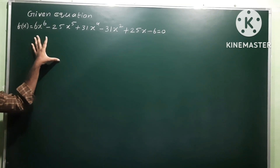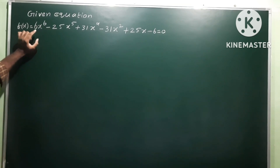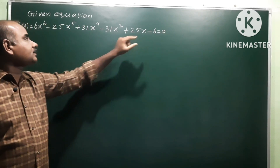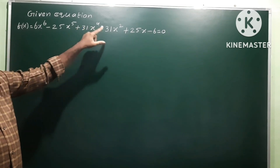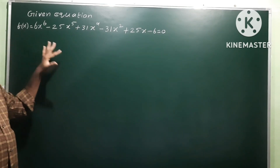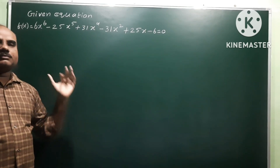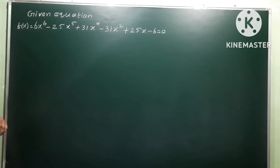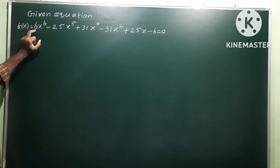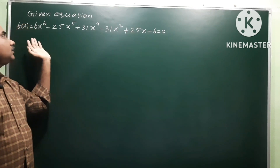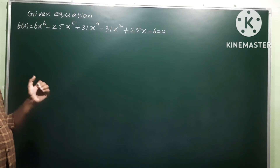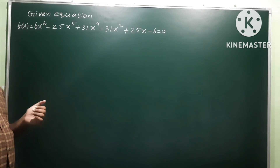Observe that this is a reciprocal equation. The first and last two coefficients: +6 and -6, -25 and +25, +31 and -31. The first and last two coefficients confirm this is a reciprocal equation.